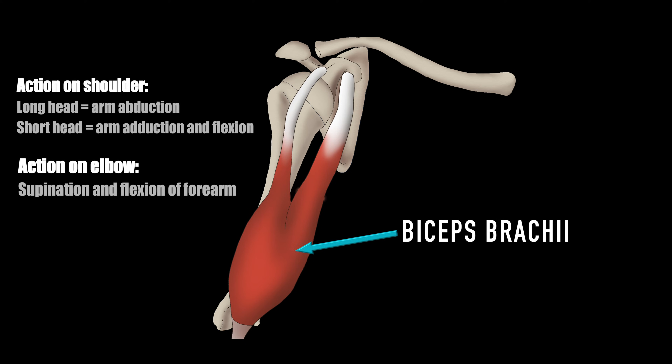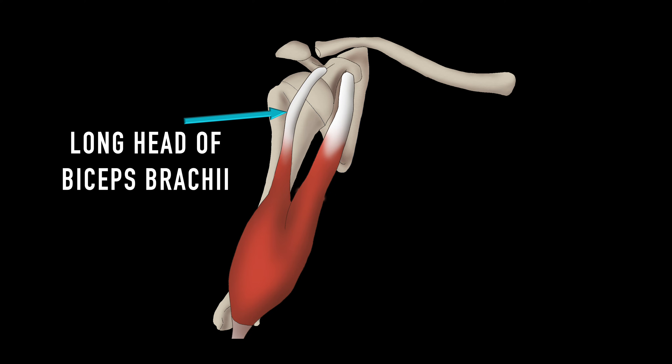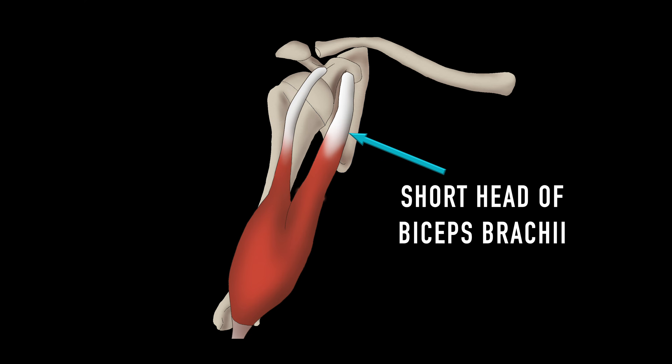Seen anteriorly, the biceps brachii has two muscle bellies and two tendons. The long head originates from the supraglenoid tubercle of the scapula and travels within the bicipital groove to join the muscle, while the short head originates from the coracoid process of the scapula.